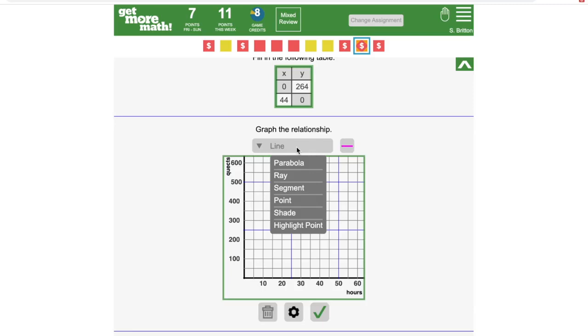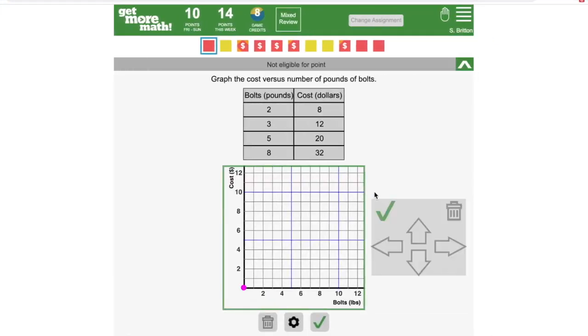In this same menu, you can find everything that you will ever need to graph in Get More Math. To graph a ray, first select the point where it begins, then another point somewhere along its path.